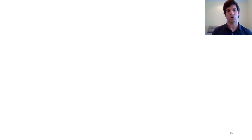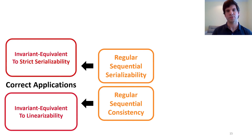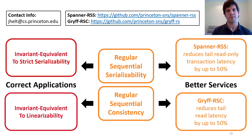In conclusion, our work presents two new consistency models to ease the trade-off between application correctness and service performance. RSS and RSC are the first consistency models that are invariant equivalent to strict serializability and linearizability respectively, allowing developers to move their applications to RSS and RSC services with the guarantee that their applications won't break. Further, because RSS and RSC relax the constraints on reads, they enable new service designs — we showed two examples, variants of Spanner and GRIF, which both offer significant reductions in tail read latency. Thank you, and I'd now be happy to answer any questions.